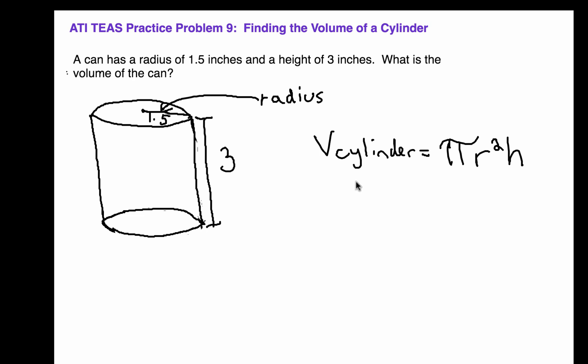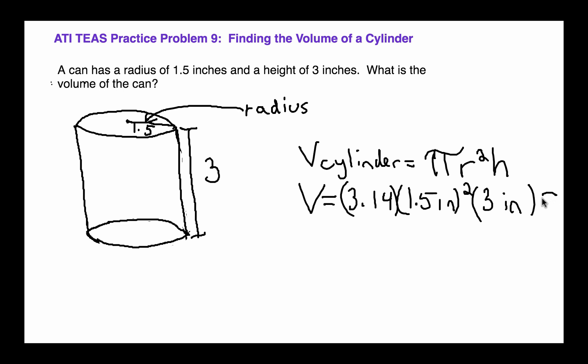So we have everything we need to calculate the volume. We're going to multiply our pi using 3.14, our radius, we're going to square 1.5 inches, and then we're going to multiply 3 inches. The answer comes out to be 21.2 inches cubed. Don't forget to put your units, very important.